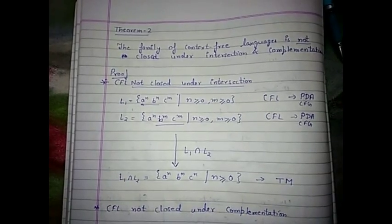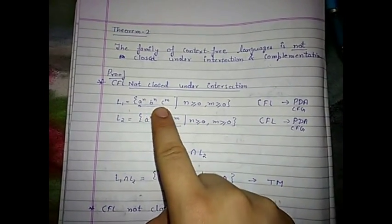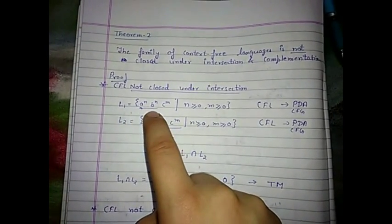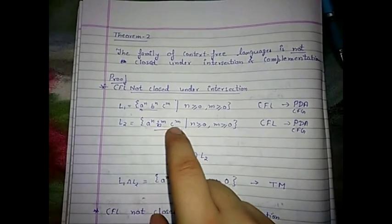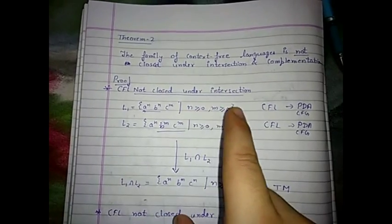We have proved this in an example. One language is a^n b^n c^m, where the number of a's and b's are equal. Another language is a^m b^n c^n, where the number of b's and c's are equal. We also know that these are context-free languages.